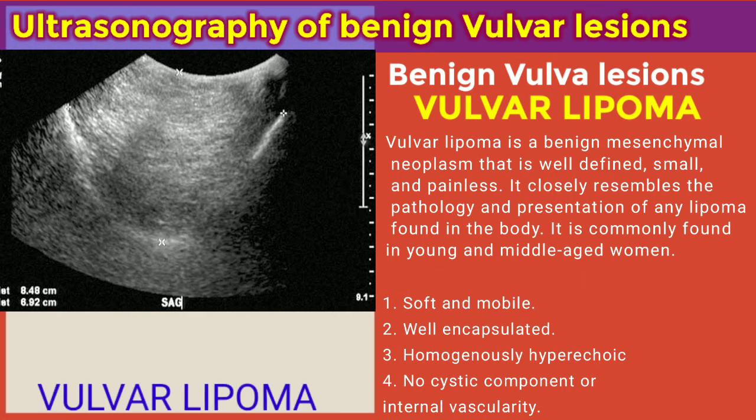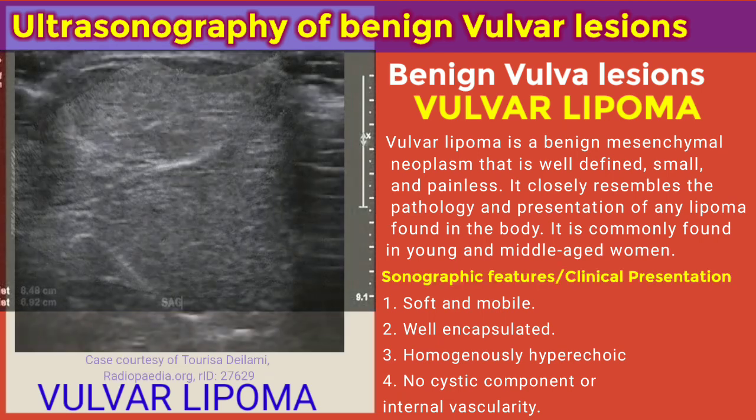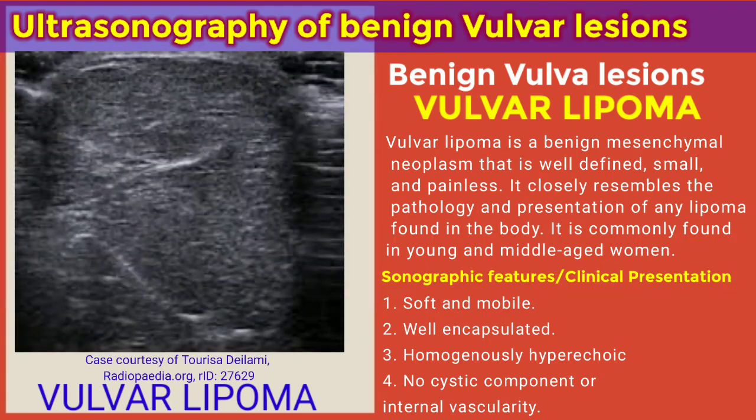The next lesion is vulva lipoma. Vulva lipoma is a benign mesenchymal neoplasm that is well-defined, small, and painless. It closely resembles the pathology and presentation of any lipoma found in any part of the body. It is commonly found in young and middle-aged women, and is usually soft, mobile, and not adherent to the skin or the underlying structures.